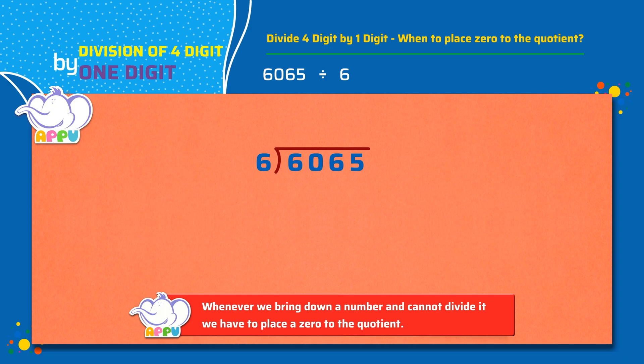Step 1: We figure out how many 6's does it take to make 6, which is 1. Step 2: We multiply 6 and 1, we get 6. Step 3: We subtract 6 minus 6, we get 0.